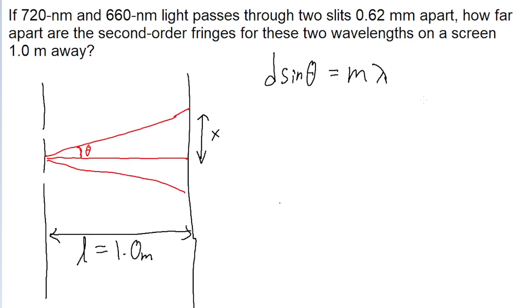We don't know what the sine of theta is, but usually in these problems we can assume, almost always, that theta is so small that we can use the approximation telling us that sine of theta is approximately equal to tangent of theta. This is true for very small angles, and we can assume it's true in this case.